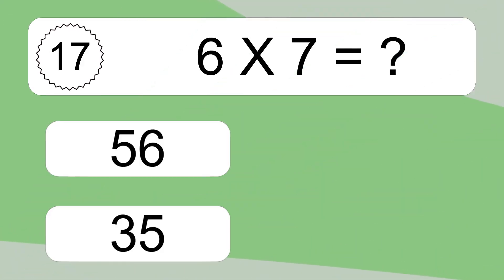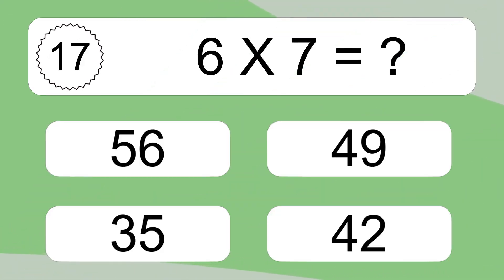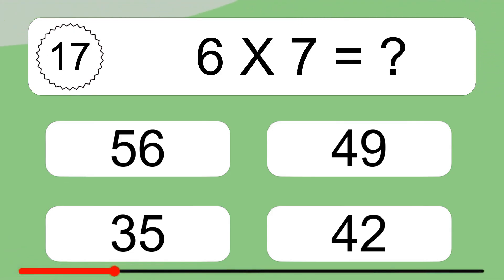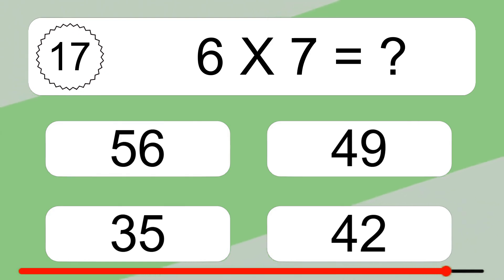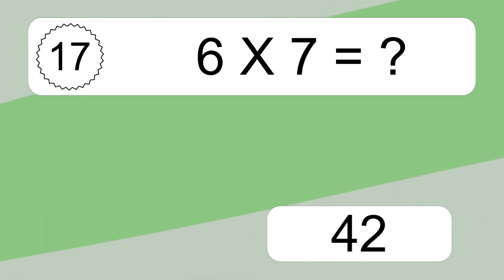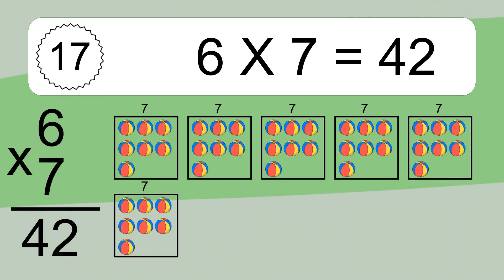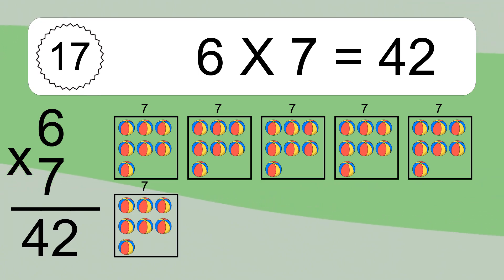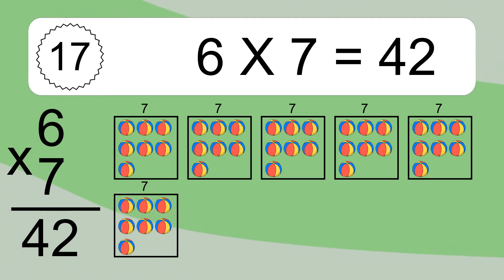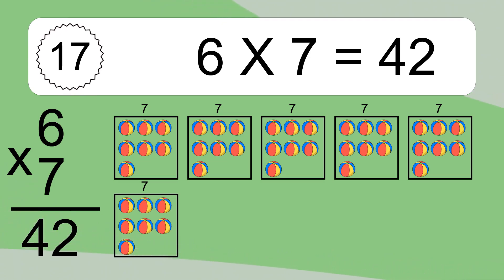6 times 7 equals what? 6 times 7 equals 42. We have 6 boxes and each box has 7 colorful balls inside. If you count all the balls in all the boxes together, you will have 6 times 7 balls. This equals 42 balls.